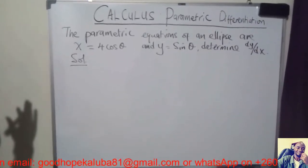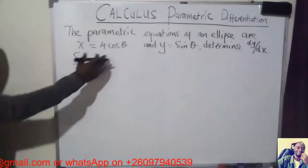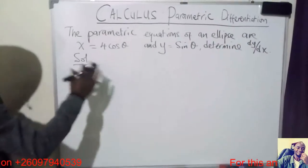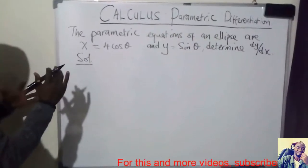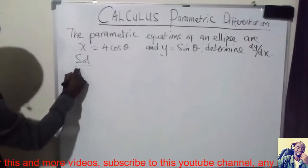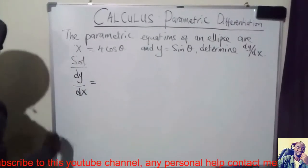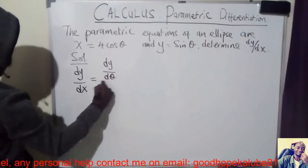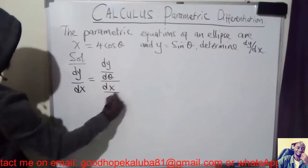To find dy over dx, we use what we call parametric differentiation. If we change theta, x will change and y will change. So to find change in y divided by change in x, dy over dx will equal, using parametric differentiation, dy divided by d theta, all divided by dx over d theta.